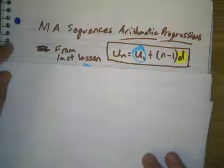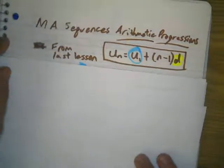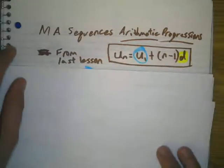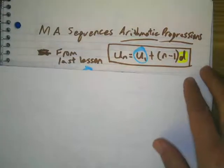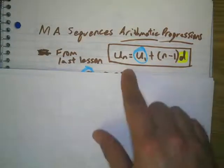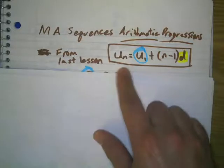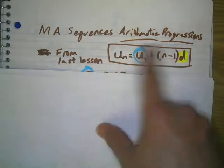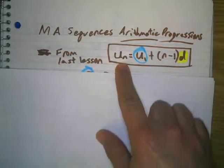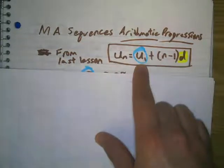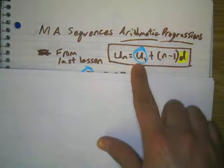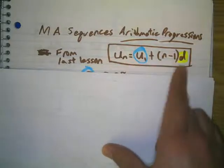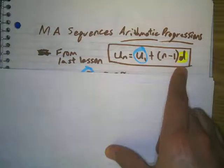Hello math application students. We're going to talk about sequences and arithmetic progressions. From the last notes you might have noticed we had the formula u sub n equals u sub 1 plus n minus 1 times d. u sub 1 is the very first term, and d is the common difference that it's increasing by.